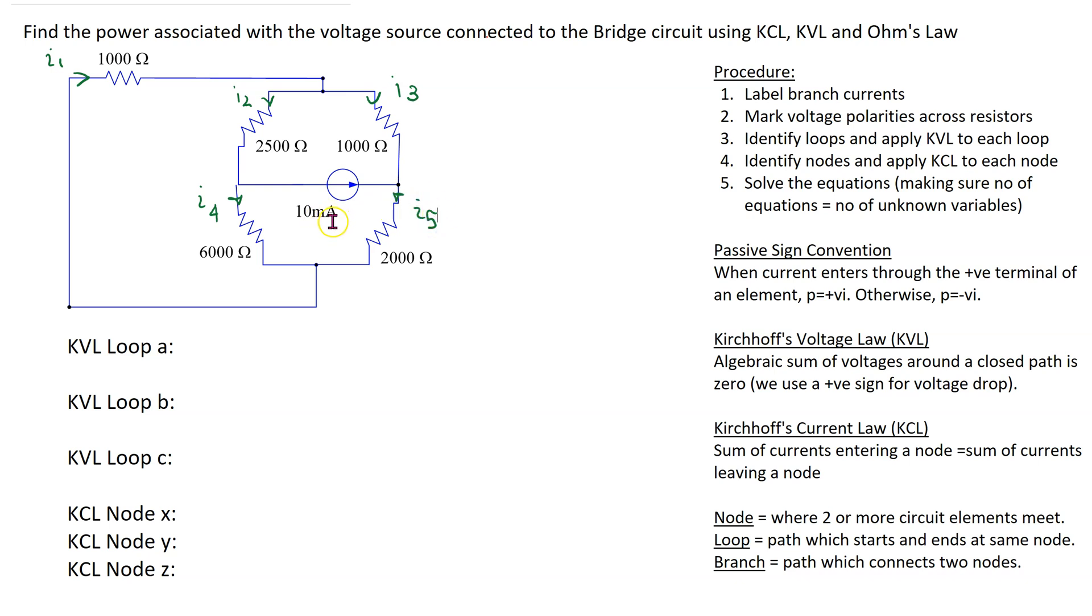Note that because of this independent current source the current in this branch is 10 milliamps and instead we can label the voltage across this current source and suppose we assume this polarity and label it as V.